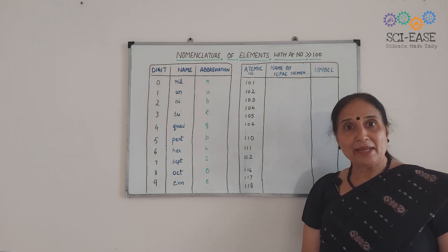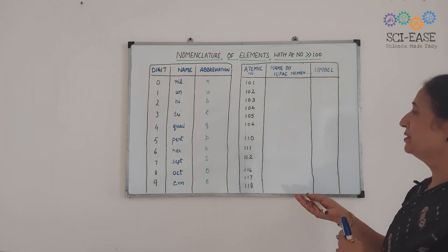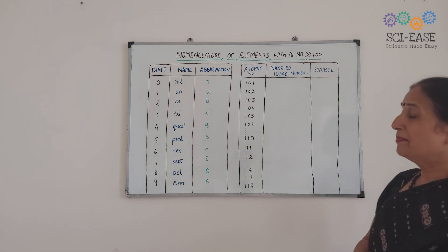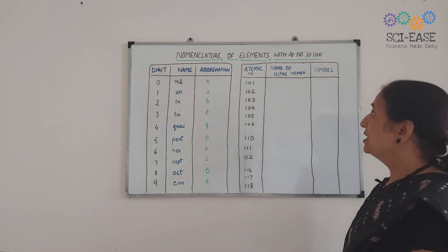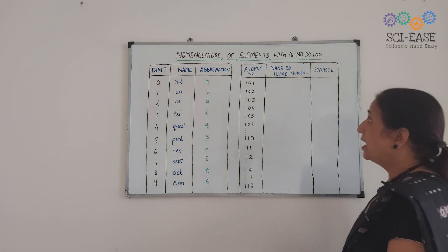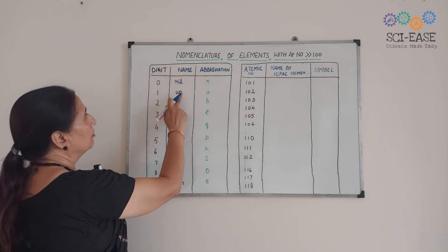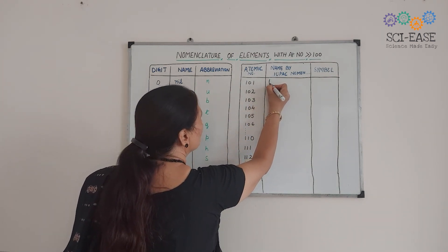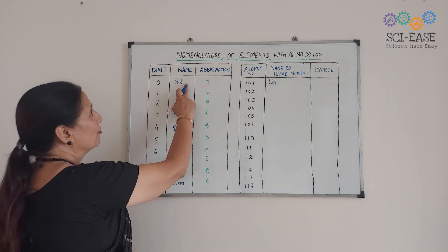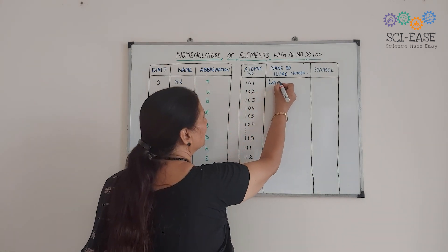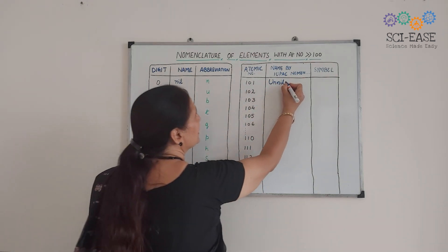Now we are going to write the names and the symbols of elements with atomic number 101 and above. For element 101: the digits are 1, 0, 1. For one we use 'un', for zero we use 'nil', and for one again we use 'un'.